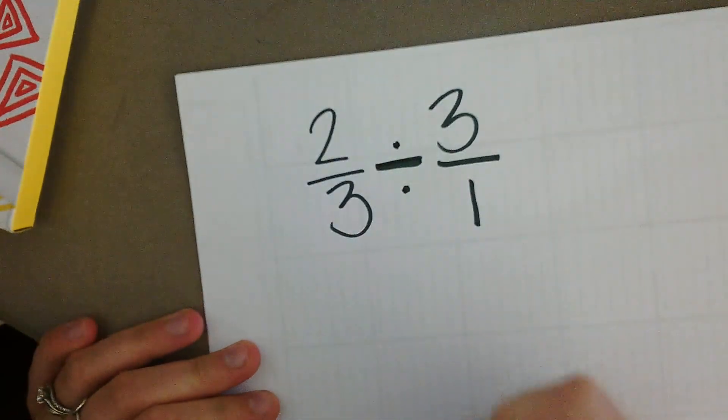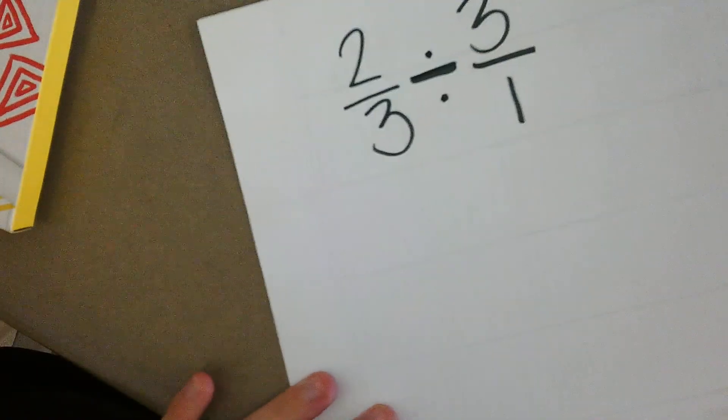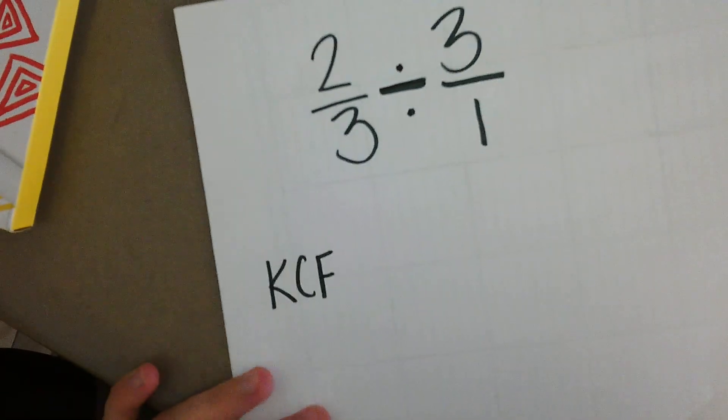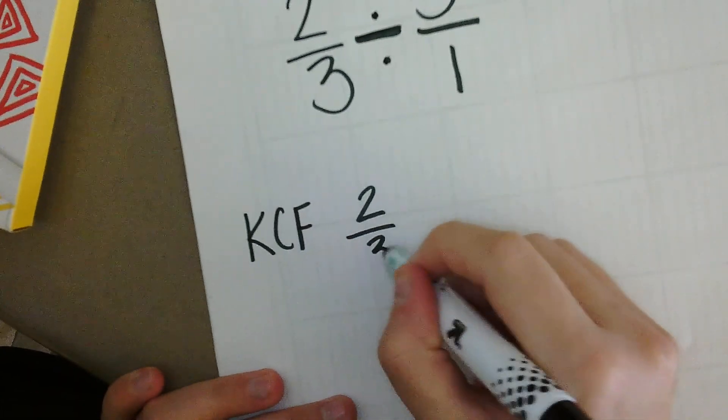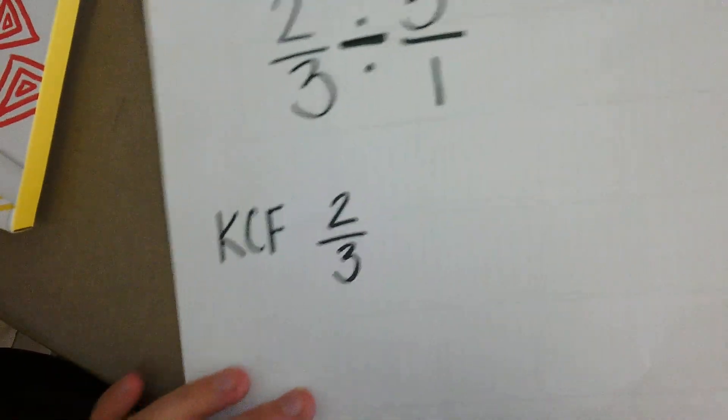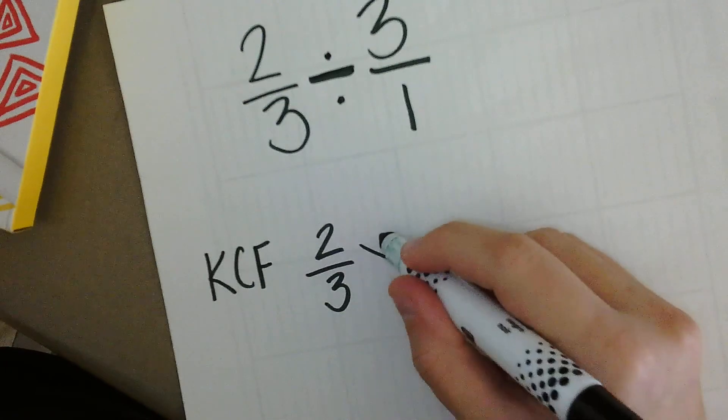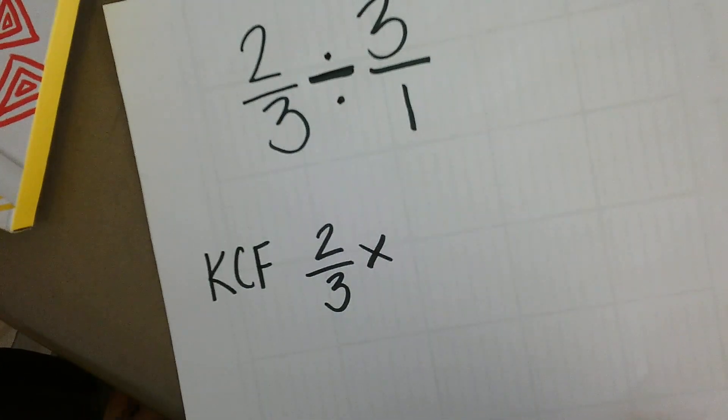The first one we're going to do is the keep-change-flip method. You're going to keep your first fraction the exact same as it is. You're going to change your division symbol to a multiplication symbol. And lastly, you're going to flip or find the reciprocal of your last fraction.